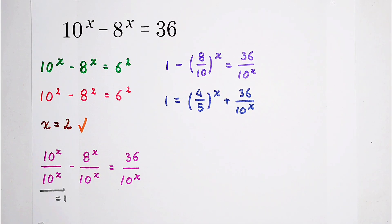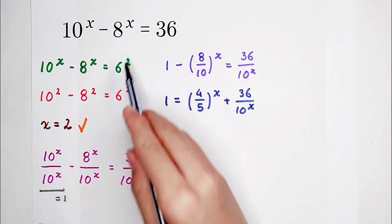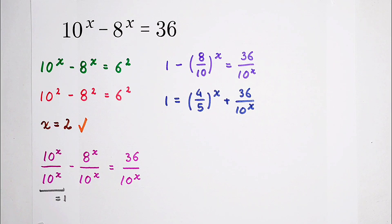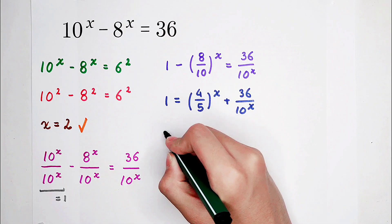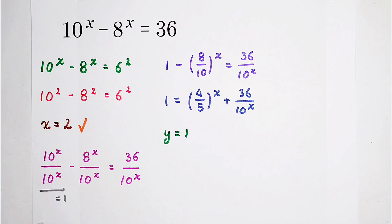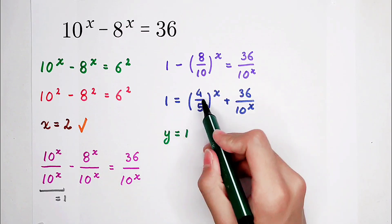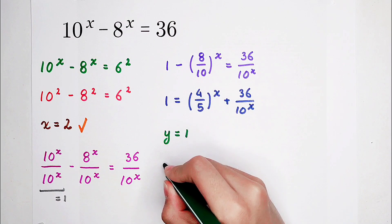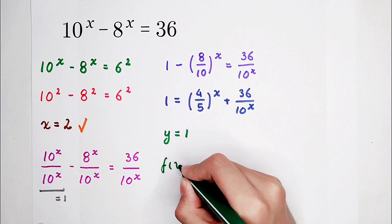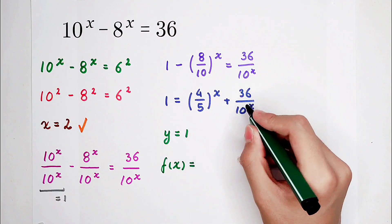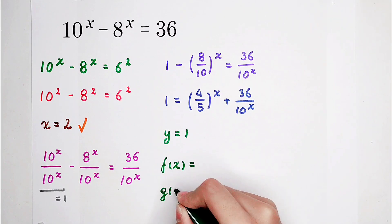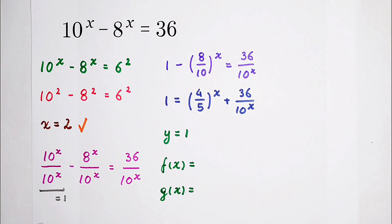Now, how can we prove that x equals 2 is the only root? The way is by using functions. The number of roots equals the number of intersections of two functions. Let the left-hand side be y equals 1. Let f(x) equal (4/5) to the power of x, and g(x) equal 36 divided by 10 to the power of x. Let h(x) be the right-hand side.